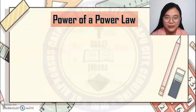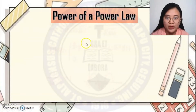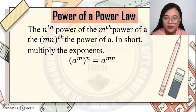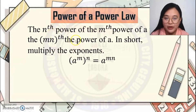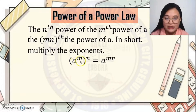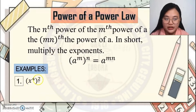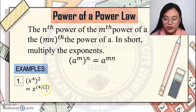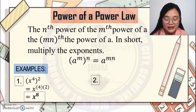Next Law — Power of a Power Law. The nth power of the mth power of a is the m times n power of a. In short, multiply the exponents. So if you have a raised to m, raised to n, you just multiply the exponents. For example, x to the 4th raised to 2 — multiply the exponents 4 and 2 — x raised to 4 times 2. The final answer is x to the 8th.